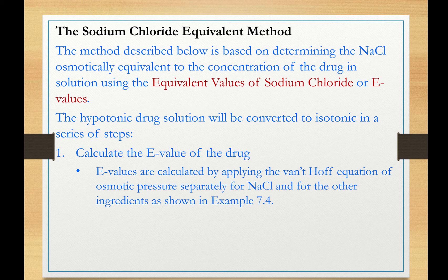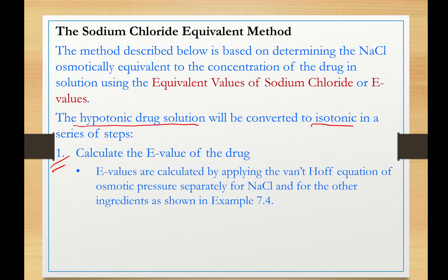Let us now describe the method in detail in a stepwise approach. Our purpose is to convert a hypotonic drug solution to isotonic using the sodium chloride equivalent method. First, we need to calculate the E-value of the drug. The E-value is essentially the amount of sodium chloride osmotically equivalent to one gram of drug. We are going to describe how to do that in Example 7.4.